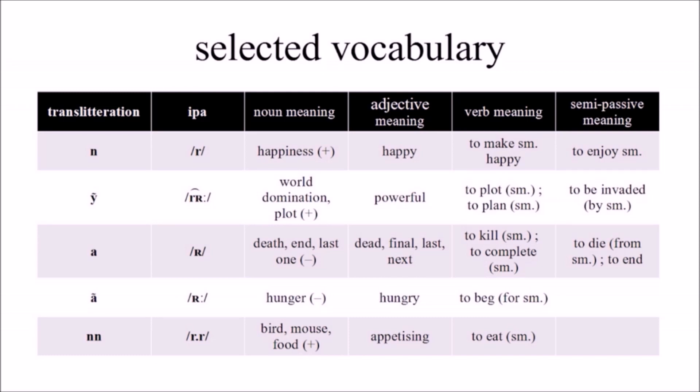Now we're going to see a bunch of vocab in the language. There is prrr, which just means happiness. It's obviously a positive noun. There is prrr, which means domination or plot.